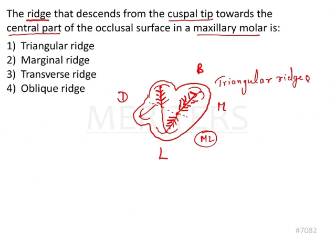Now if the triangular ridge of the mesial buccal cusp meets with the triangular ridge of the mesial lingual cusp, a complete ridge is formed and this is known as the transverse ridge. If the triangular ridge from the distal buccal cusp meets with the mesial lingual cusp, there will be formation of another ridge that is known as the oblique ridge, because it obliquely crosses the crown.